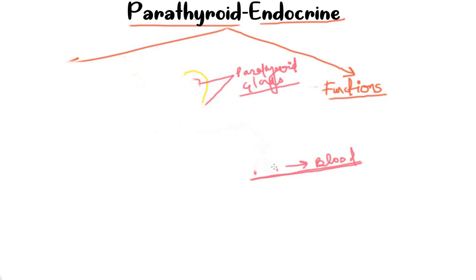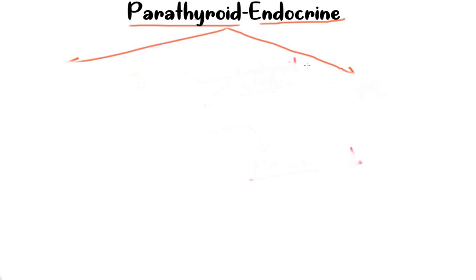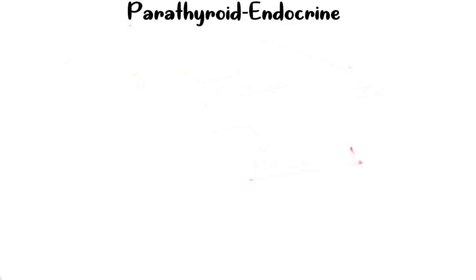Now we will take on the functions of the parathyroid hormone. As the parathyroid hormone is released into the blood, the primary target is the bone and the second target is the kidney.